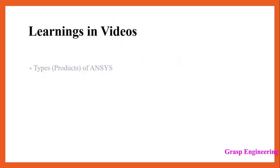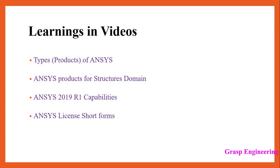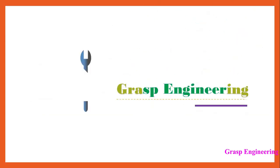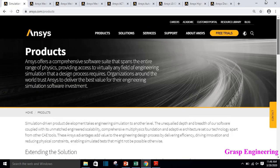This slide represents the learnings in this video. As discussed earlier, we will first see what are the types or products of ANSYS, then what are the major products for the structure domain, then ANSYS 2019 R1 capabilities as well as ANSYS 19 capabilities, and ANSYS license short forms which are useful while selecting a particular license.